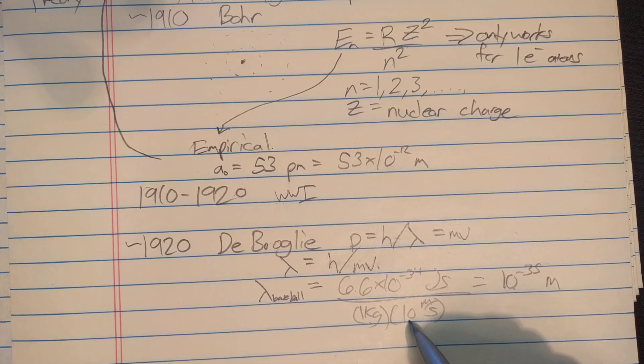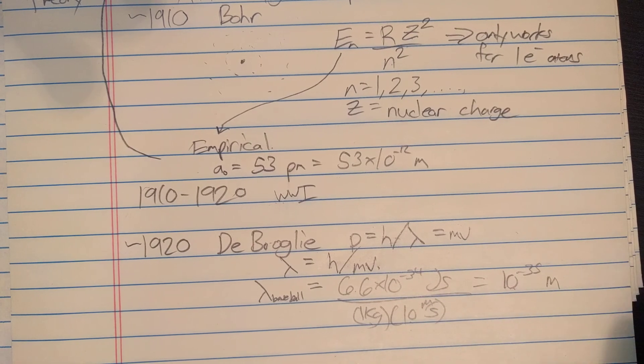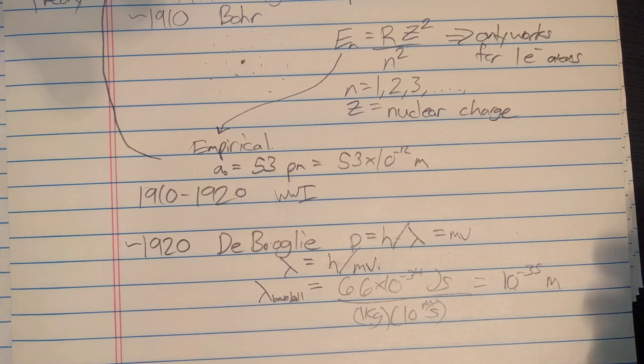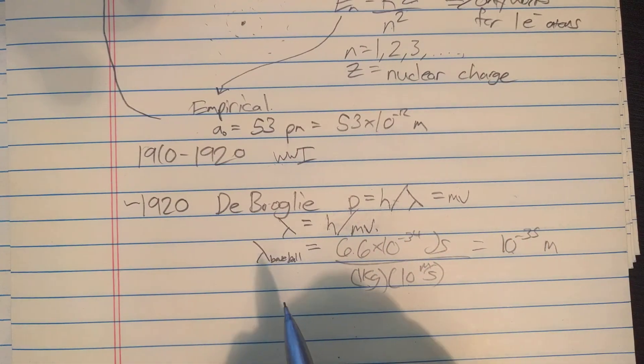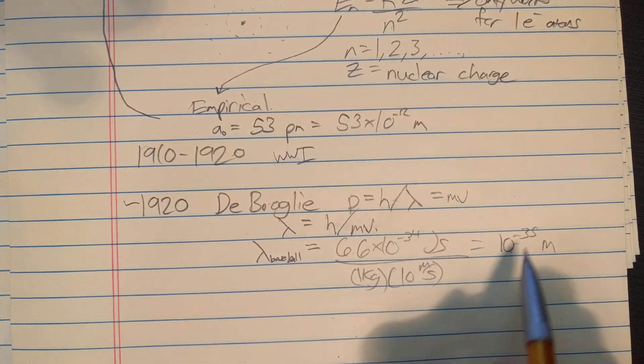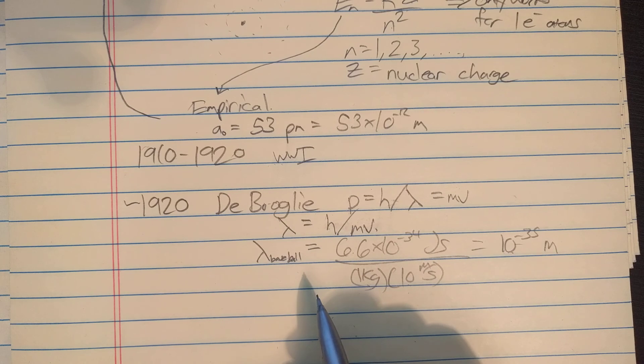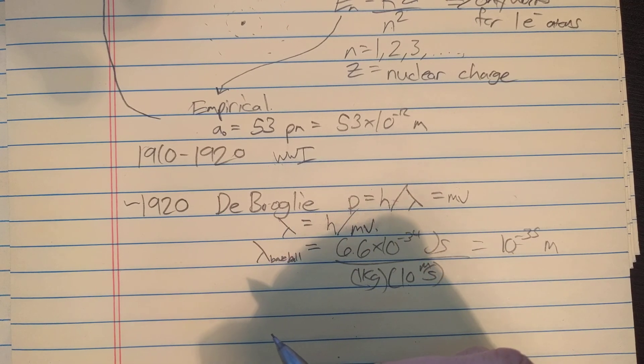That's why in everyday life we do not realize the wave nature of matter, because matter mostly weighs a lot and it's moving most of the time. That gives us a sense of the wavelengths of everyday objects.